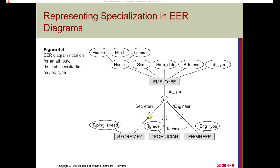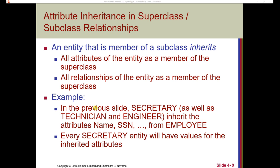An entity that is a member of a subclass is said to inherit from the superclass — it inherits all attributes of the entity as a member of the superclass, and also inherits all relationships of that entity as a member of the superclass. For example, secretary, technician, and engineer inherit the attributes name, social security number, et cetera from the employee superclass, and every secretary entity will have values for those inherited attributes.